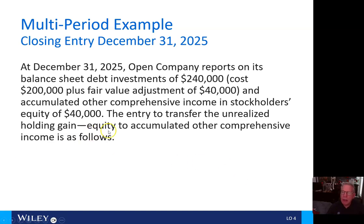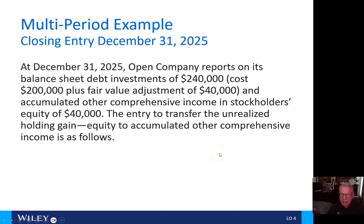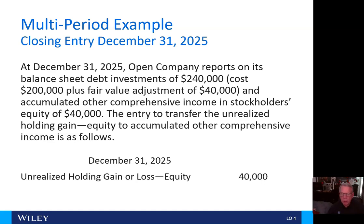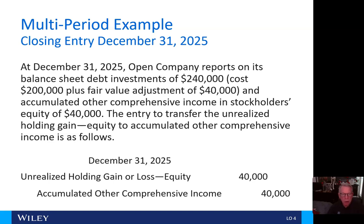At December 31, 2025, Open Company reports on its balance sheet debt investments of $240,000, representing the cost of $200,000 plus the fair value adjustment of $40,000. The entry to transfer the unrealized holding gain equity to accumulated other comprehensive income is: debit unrealized holding gain or loss — equity for $40,000 and credit accumulated other comprehensive income for $40,000.